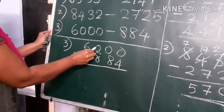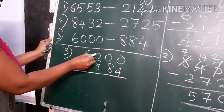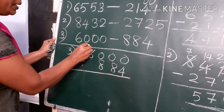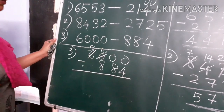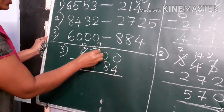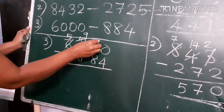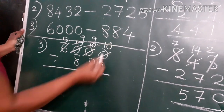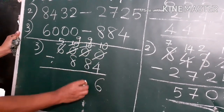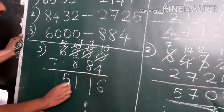The hundreds place is also 0. So the hundreds place will borrow from the thousands place. The thousands place here is 6. When we borrow from 6, it becomes 5 and the hundreds place 0 becomes 10. Now the tens place can borrow from the hundreds place — hundreds place reduces by 1 to become 9, and the tens place becomes 10. Then the ones place borrows from the tens place — tens place becomes 9 and ones place becomes 10. Now: 10 minus 4 is 6, 9 minus 8 is 1, 9 minus 8 again is 1, and we write down the 5. This is the answer.